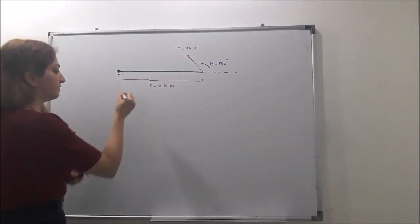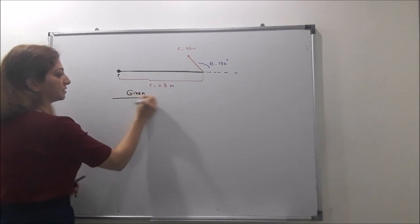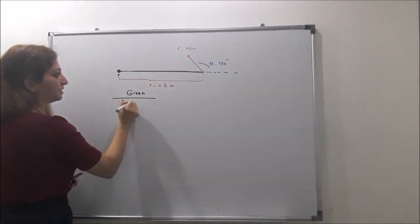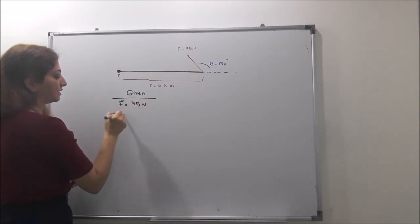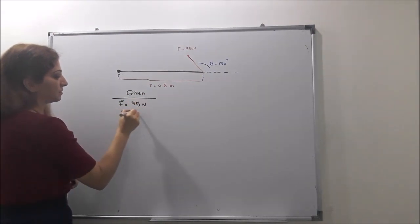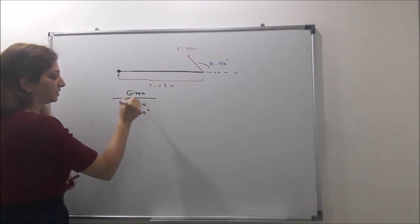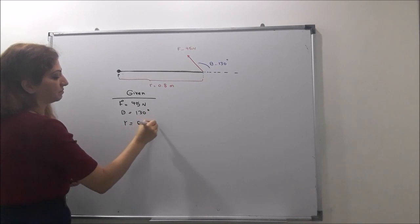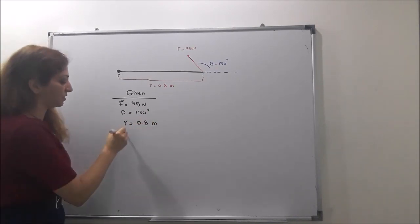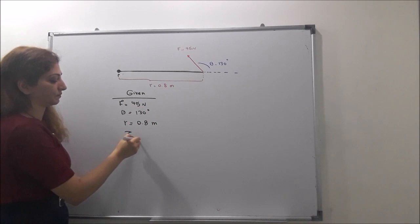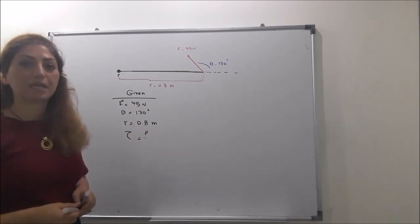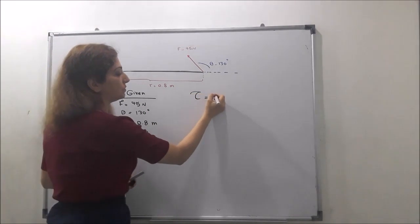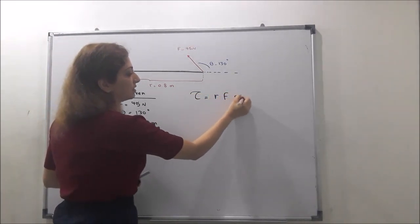What is given: the force is 45 Newtons, theta is 130 degrees, and the radius is 0.8 meters. What is asked is the torque, which we don't have. The formula I write first: torque equals R times F times sine theta.